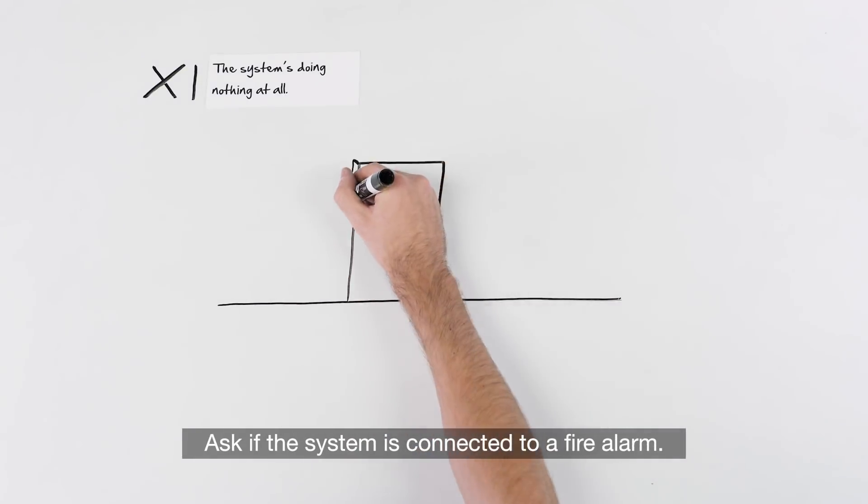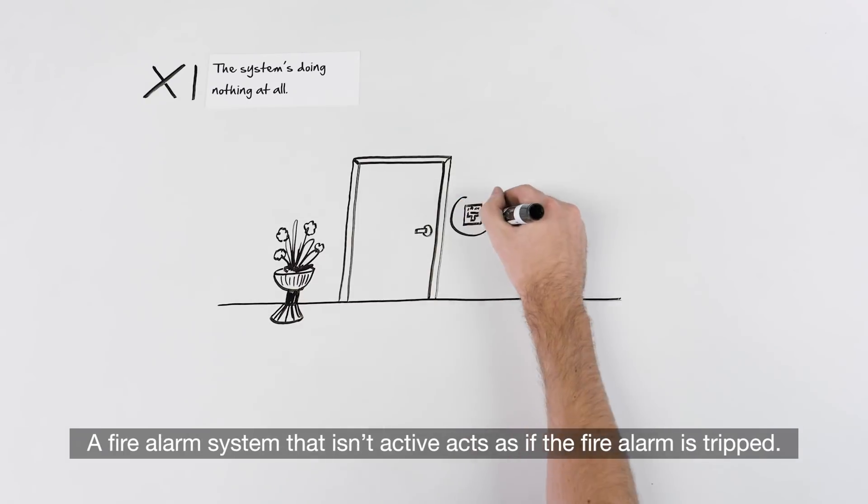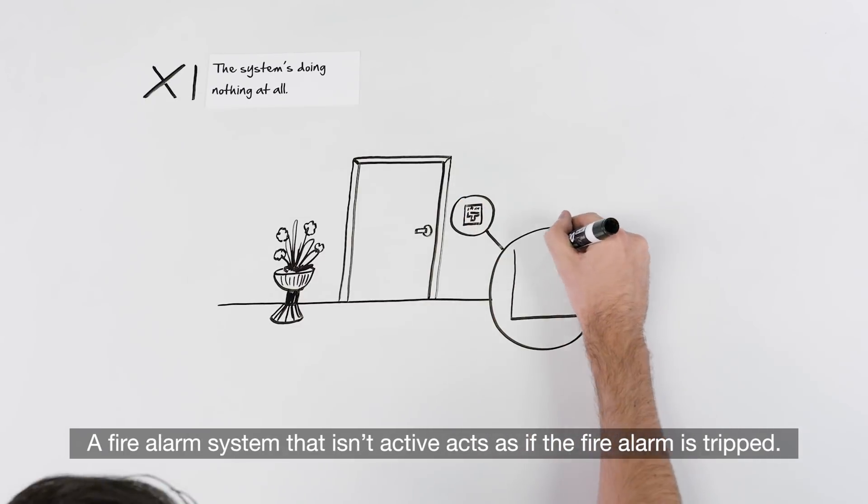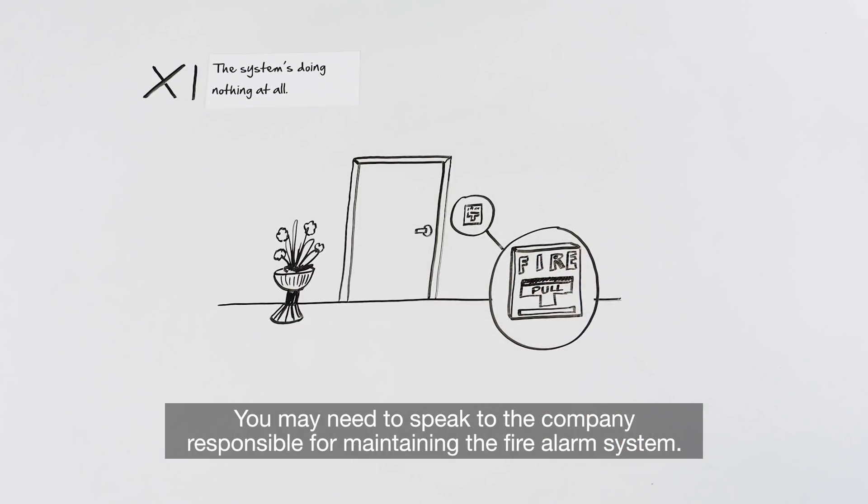Ask if the system is connected to a fire alarm. Fire alarms are often hooked into the power for a security system, so they can cut power to the system in the event of a fire. A fire alarm system that isn't active acts as if the fire alarm is tripped. In other words, an inactive fire alarm system will prevent power from flowing through the system. You may need to speak to the company responsible for maintaining the fire alarm system.